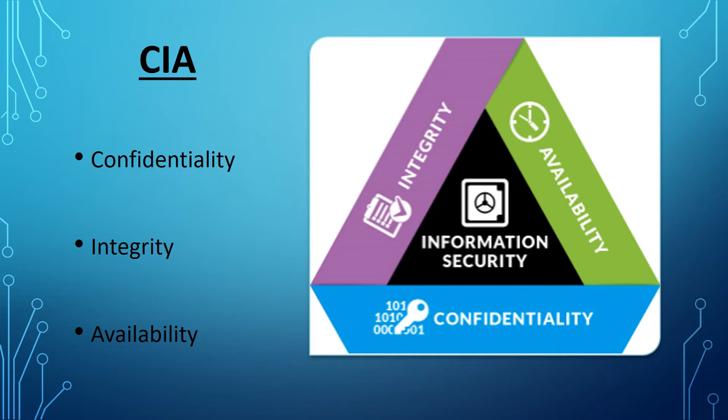Next is integrity. Integrity involves maintaining the consistency, accuracy, and trustworthiness of data over its entire life cycle. Further, availability — the availability of information.